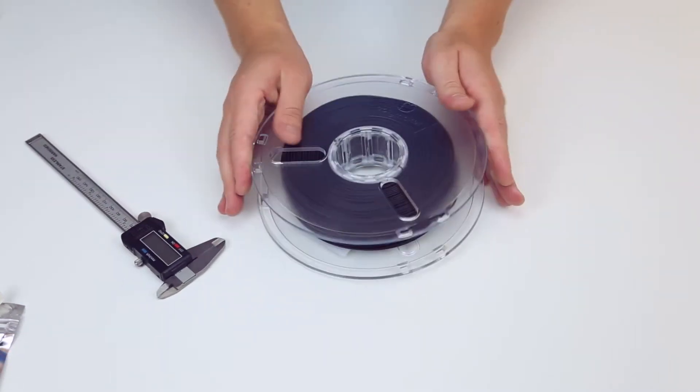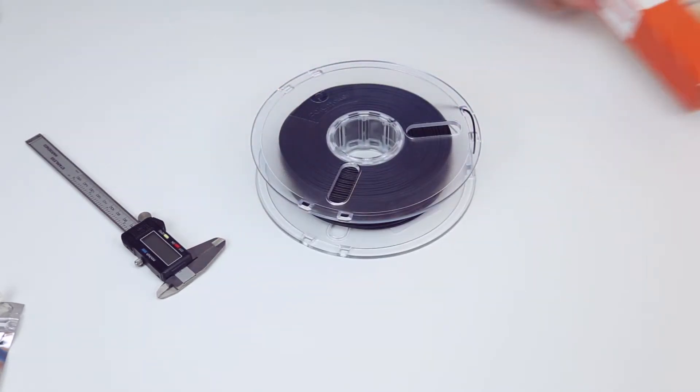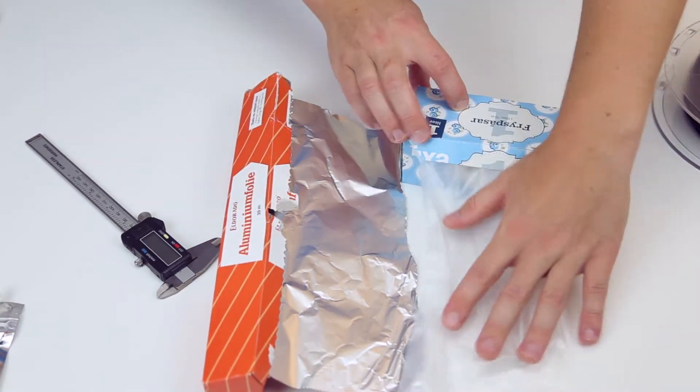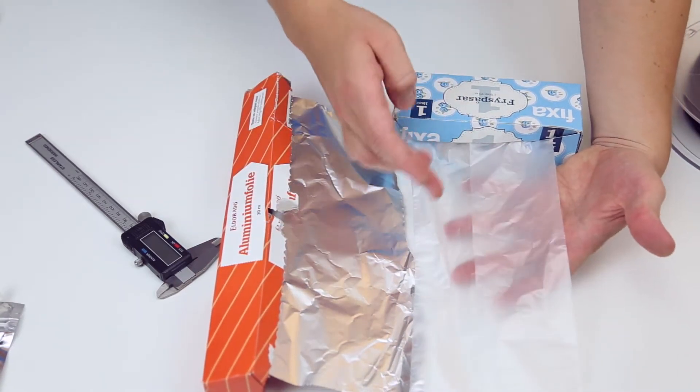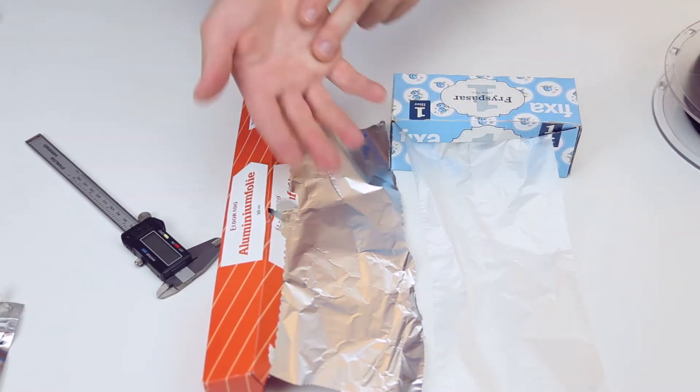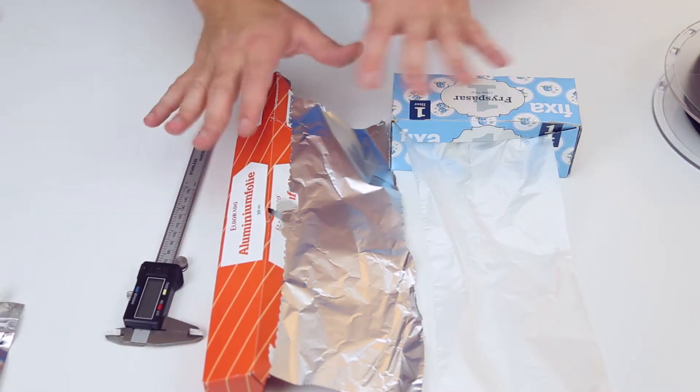Of course we need some tools. We need to measure all the components. We need some filament for printing. I'm not going to use the black one but yeah just for show. And we're actually going to use aluminum foil and some plastic bags. You want to have these frosted freezing bags because they diffuse the lights much better. And that's the whole goal here. It's to use cheap components, cheap tools, something that you can do at home.